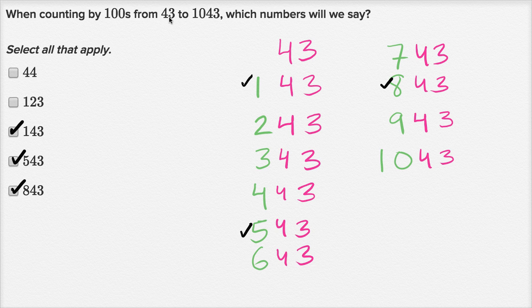Now you might have been able to do this in your head. You might have said, okay, 43, then 143, then 243, 343, 443, 543, 643, 743, 843, and then 943, and then 1,043. Either way, these are the numbers that we found.